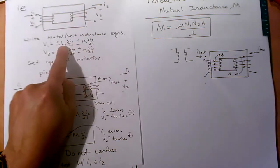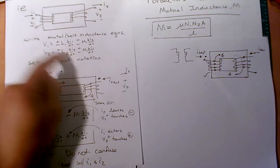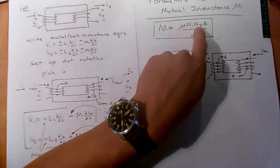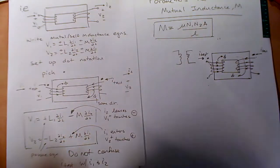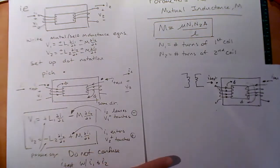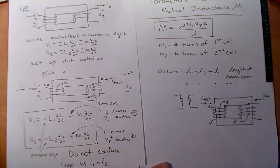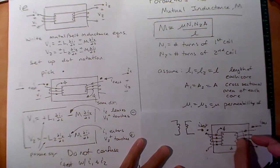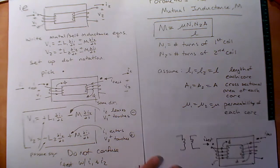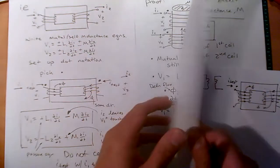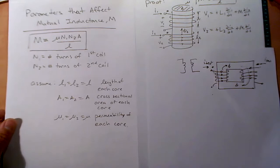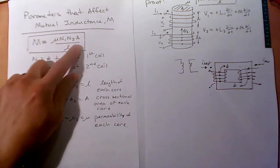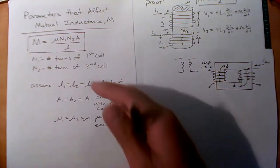What is this M term? We already know what the L term is — it comes from Faraday's law. The M term also comes from Faraday's law and it's very similar: M = μN1N2A/l, where L = μN²A/l. N1 and N2 are the number of turns of each coil. You're assuming they both have the same stack height, the same cross-sectional area, and the same permeability — shared permeability of the core. This is a visual proof of where the M term comes from and why it has a similar feel to the self-inductance formula.